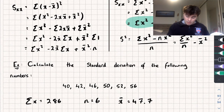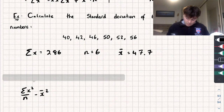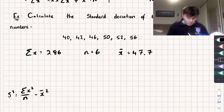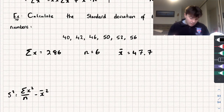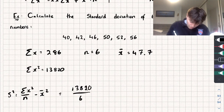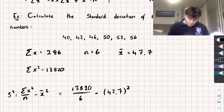Now we've got the mean, what else do we need for our variance formula? Using the formula s-squared equals sum of x-squared over n minus x-bar squared, I need the sum of my x-squared terms: 40 squared plus 42 squared plus 46 squared plus 50 squared plus 52 squared plus 56 squared. Working that out, the sum of x-squared equals 13,820. So we get 13,820 divided by 6, subtract 47.7 squared.